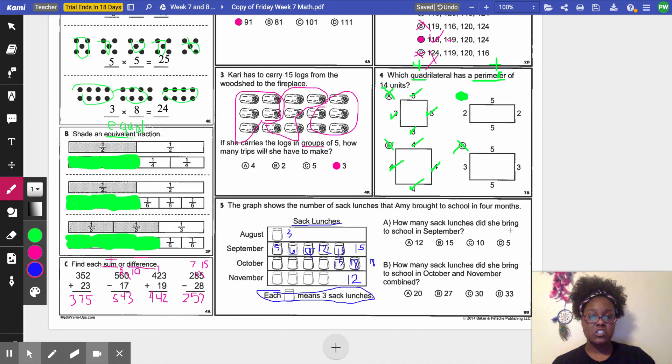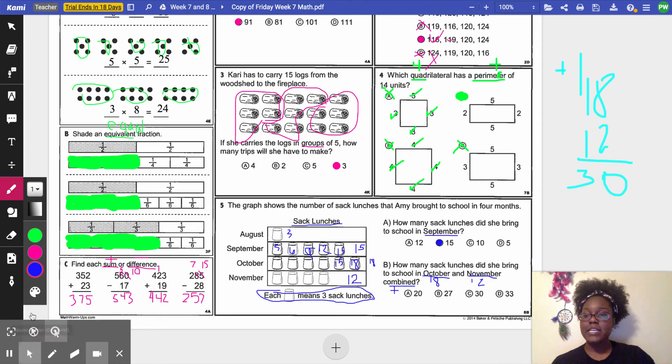Letter A, how many sack lunches did she bring to school in September? So I'm looking at September. She has 15. So my answer to letter A is 15. Then I'm going to letter B. How many sack lunches did she bring to school in October and November combined? Combined means that we are going to add. We're putting them together. Yes, I do a lot of actions in class. So combined means to put it together. So we're going to do 18 plus 12. And I know that 8 plus 2 is 10. So I am going to have to regroup. 8 plus 2 gives me 10. My 0 is in my ones place. My plus 1 is above my tens place. 1 plus 1 plus 1 is 3. So my sum on this one, the sum is an answer to an addition problem, is 30.